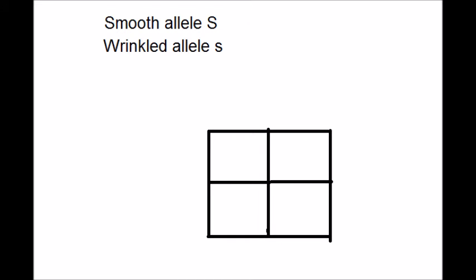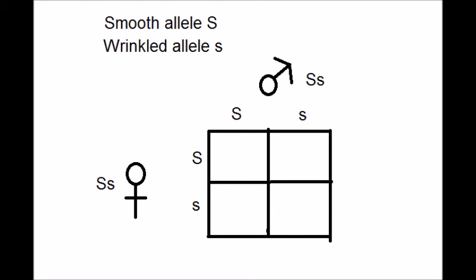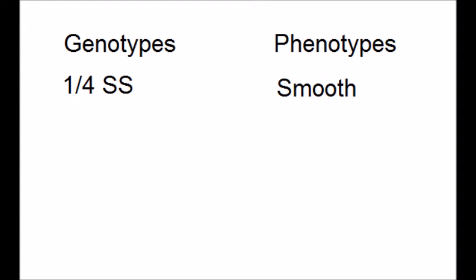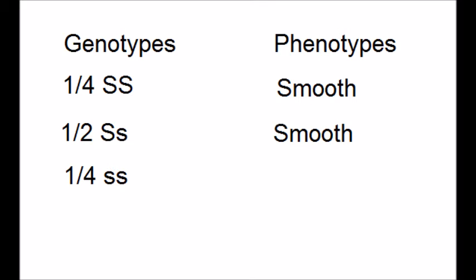Let's do another Punnett square for the second cross. In this case both the male and female plant have genotype Ss. Each plant will produce 50% big S gametes and 50% little s gametes. In the top left box the offspring inherit big S from both parents and are homozygous dominant. In the top right and bottom left boxes the offspring are heterozygous. In the bottom right box the offspring inherit little s from both parents making them homozygous recessive. Our Punnett square predicts that one quarter will be homozygous dominant, half will be heterozygous — both having a smooth phenotype — and one quarter will be homozygous recessive with a wrinkled phenotype. This gives a 3 to 1 phenotypic ratio, exactly matching Mendel's results.